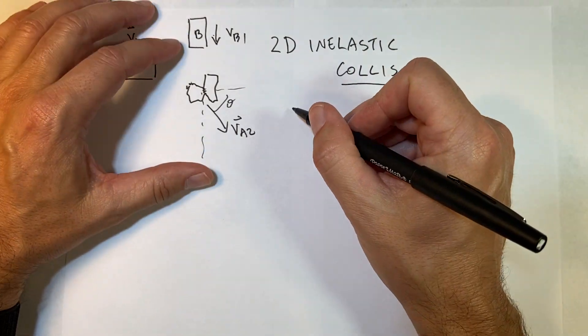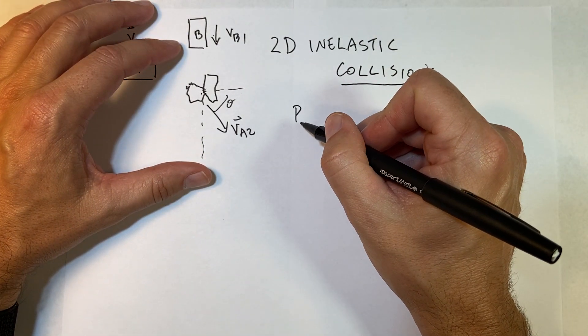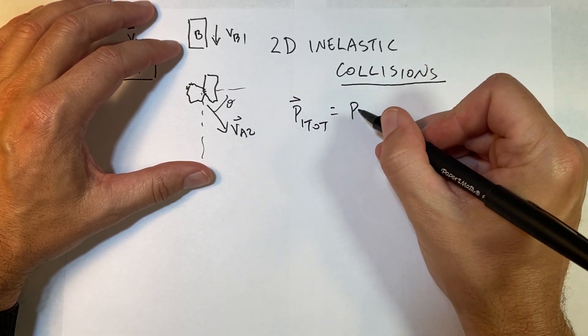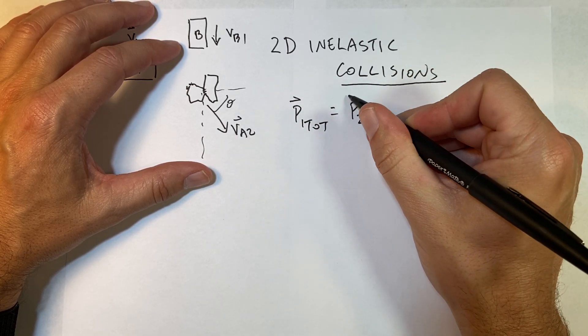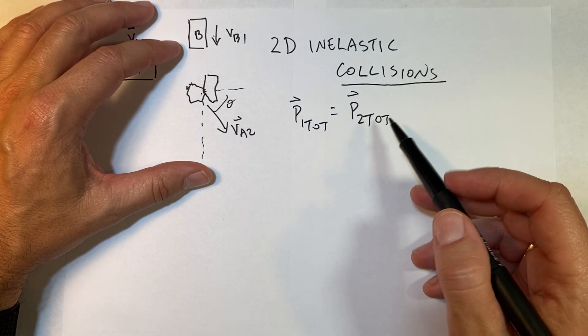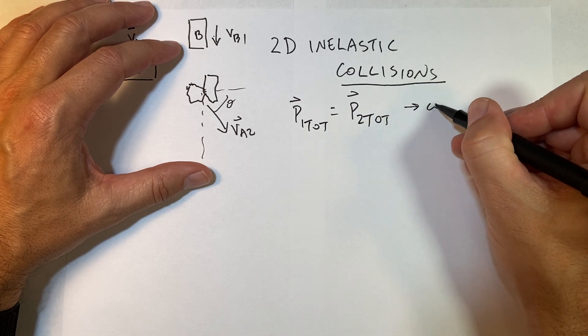But again, we have the following: P_1tot equals P_2tot. This says the total momentum before the collision is equal to the total momentum after the collision. This is what we call conservation of momentum.